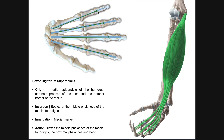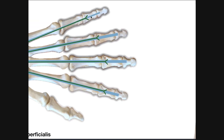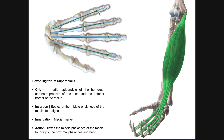Notice that the tendons of flexor digitorum profundus are deep to the tendons of flexor digitorum superficialis, but they sort of cross through that gap created in the tendons of the superficialis, and they extend a little bit further and insert on the distal phalanx. Flexor digitorum superficialis inserts on the middle phalanx, and those tendons are split — that creates a gap for the tendon of flexor digitorum profundus to extend through and insert further on the distal phalanges of digits 2 through 5.